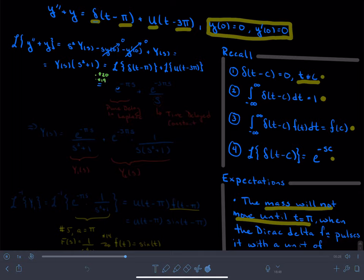Transforming this Dirac, I get e to the negative pi s. And then transforming this step function, I get e to the negative 3 pi s over s.